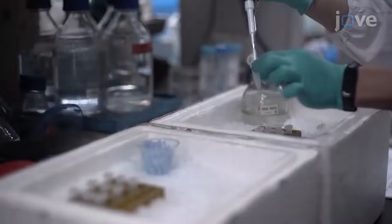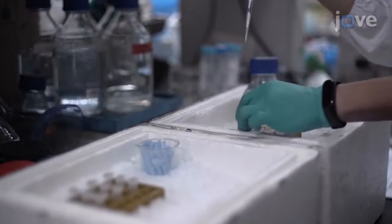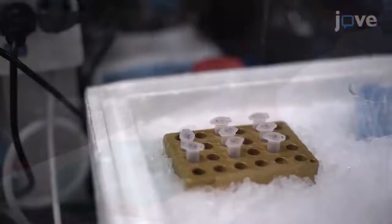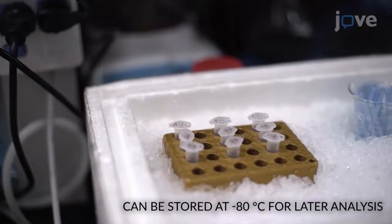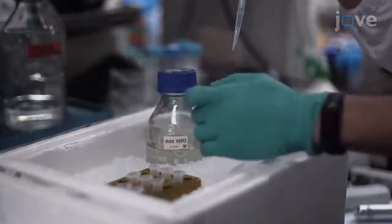Aliquot 10 microliters of each homogenized sample into a new tube for protein content measurement, keeping these tubes on ice as well. Add 400 microliters of ice cold extraction buffer to each remaining sample.